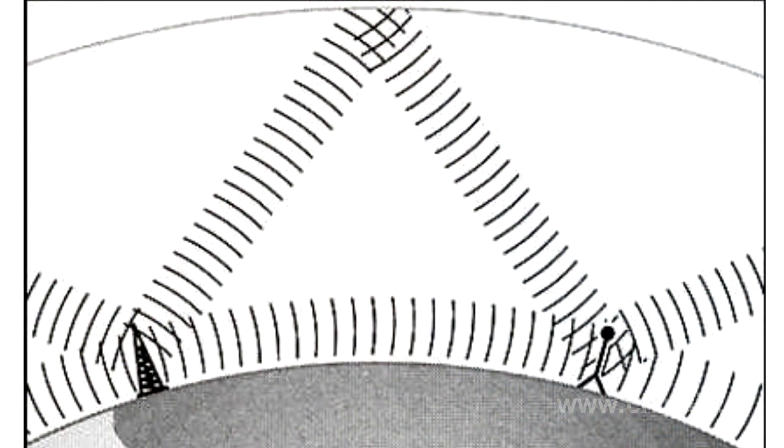In relation to radio waves, the ionosphere has the properties of reflection, refraction, and attenuation of radio signals. The ionosphere consists of different layers located at different heights.